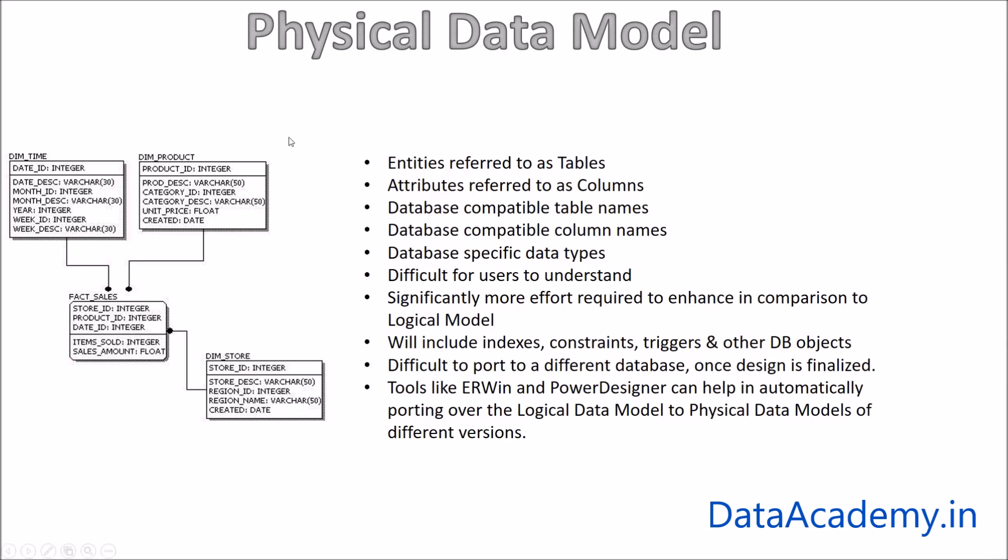And when it comes to physical data model, it will also include other objects that are not immediately visible on this diagram, such as indexes, constraints, triggers, and other DB objects such as stored procedures, functions. So these are the objects that are very much required in order to implement a physical data model.